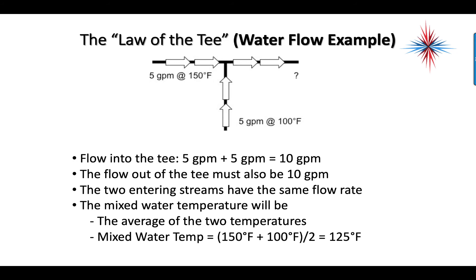Now we can add temperature. If we have five gallons per minute at 150 degrees Fahrenheit and five gallons per minute at 100 degrees Fahrenheit, we know our flow into the tee is five and five - that's 10 gpm. So the flow out of the tee must also be 10 gpm. Now we have a temperature to deal with. The mixed water temperature is the average of the other two temperatures because the flow rates are equal. So I have 150 plus 100, that equals 250, and I divide it by two because these flow rates are equal.